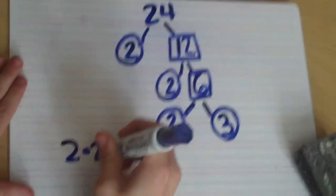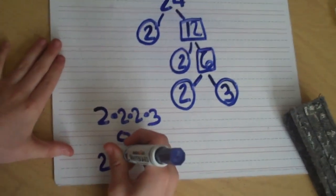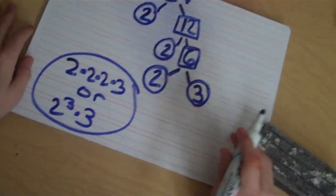2 times 2 times 2 times 3, or you could write it as 2 to the 3rd power times 3. That's how you do prime factorization.